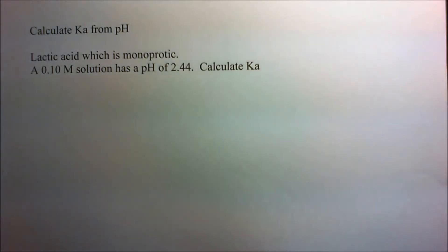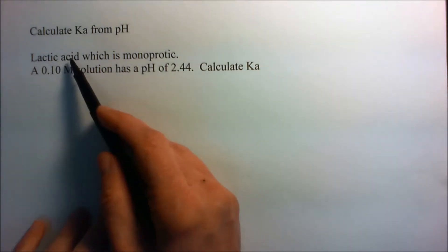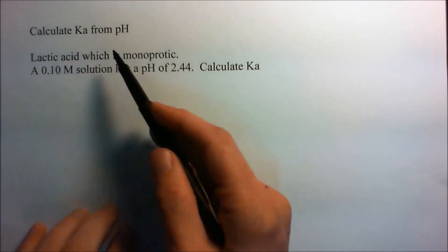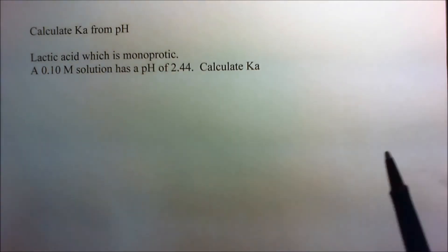We can calculate the Ka from the pH of a solution. For example, we have lactic acid, which is monoprotic. That means for every mole of lactic acid, we get a mole of H+ potentially, but we don't because it's a weak acid.